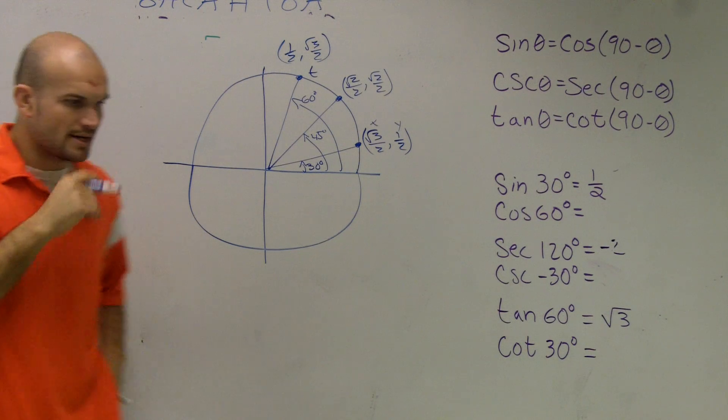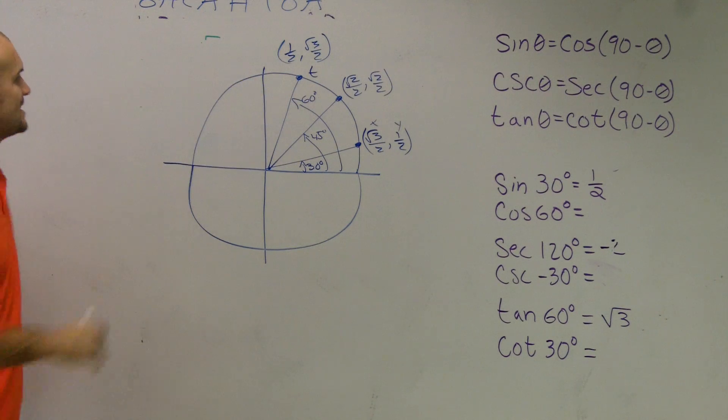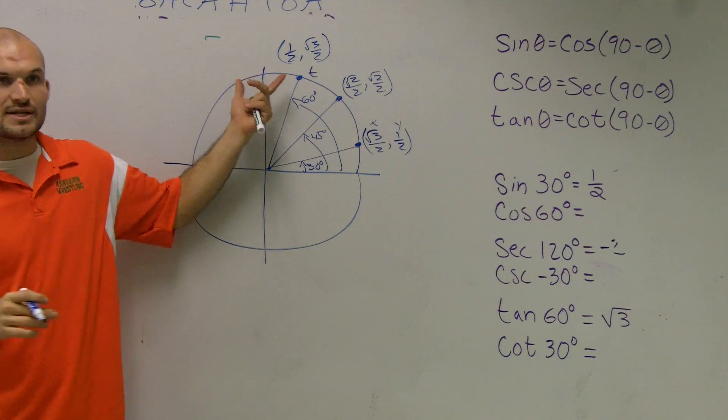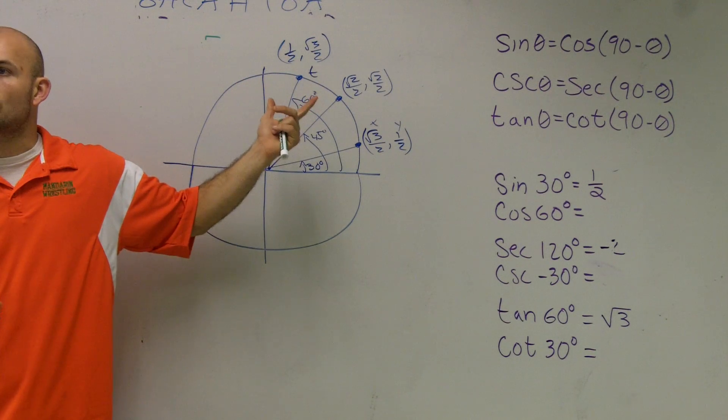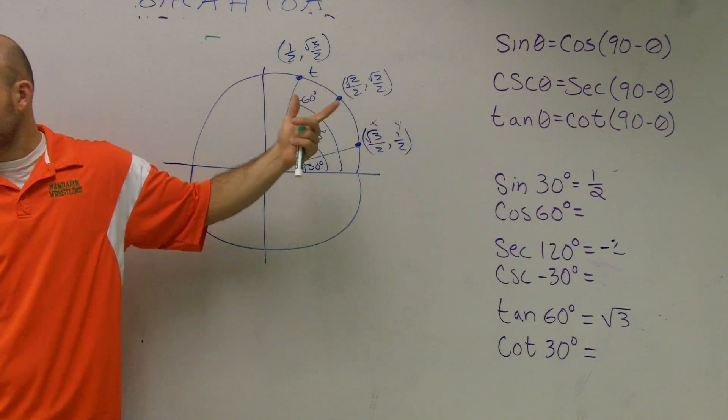So, remember when we're talking about our point T, if I say cosine of my point T, that represents cosine deals with the x or the y coordinate of T. X, right? And sine deals with the y coordinate, correct?